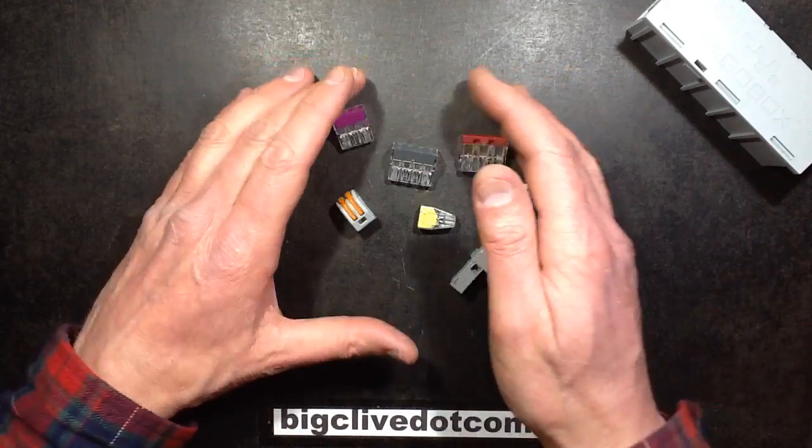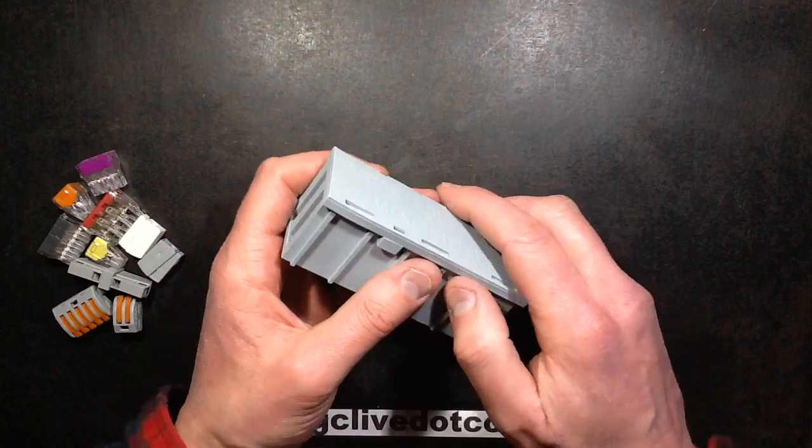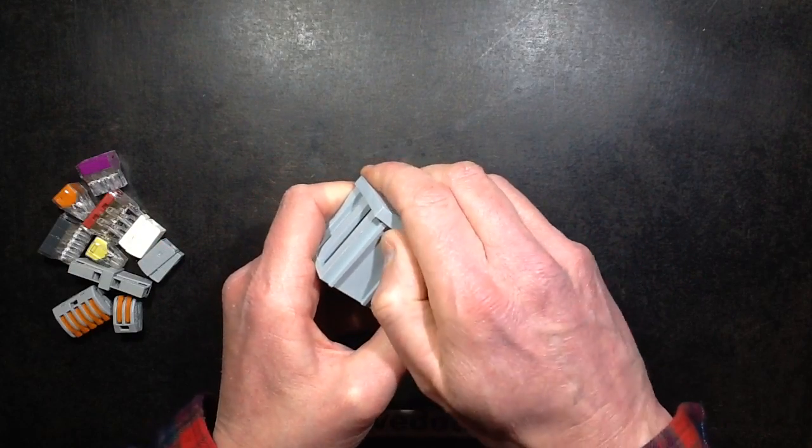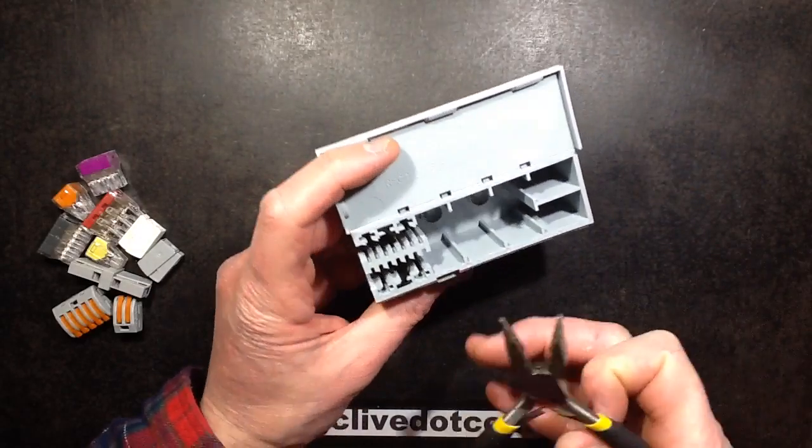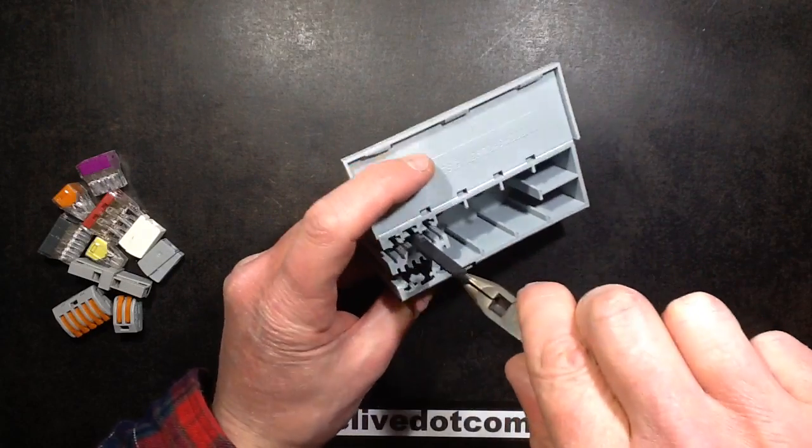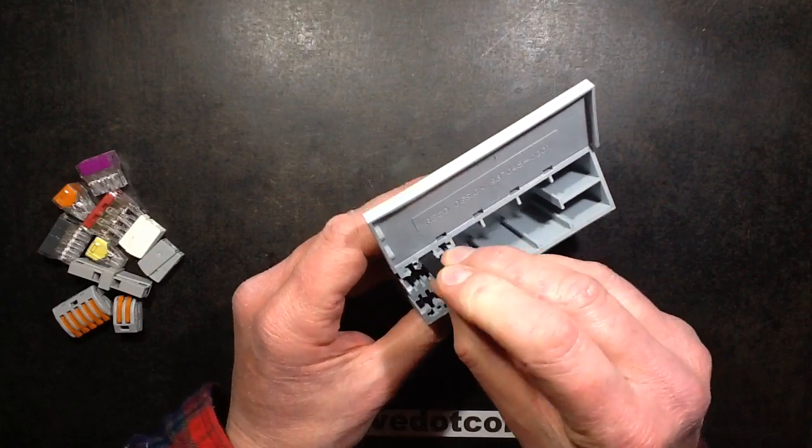After these had been out for a while a chap came out with a device called the Wago box and this is just genius, it's so clever. It's a clipped together box and it's got these cable strain reliefs that just slot down into it, they're sort of stiff plasticky ribs that go in here.